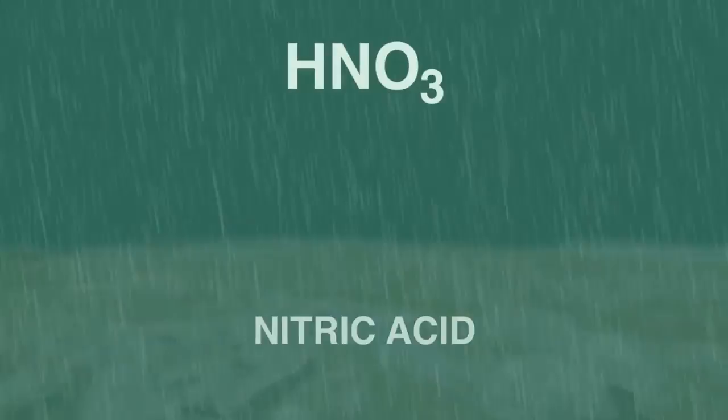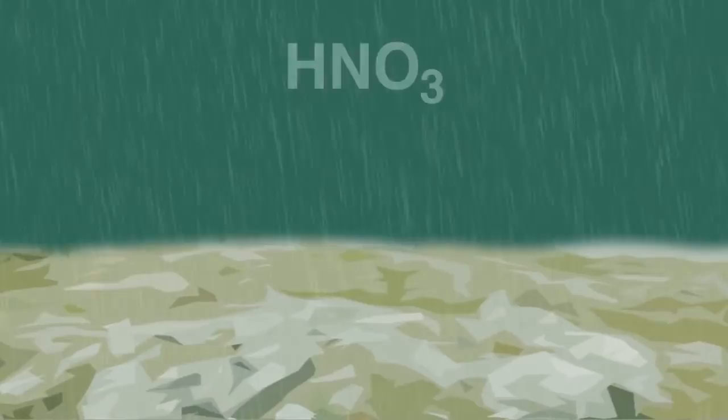If the rain falls on limestone soils which are alkaline, the acidity may be neutralized. However, if the rain lands on neutral or acid soils or on vegetation, then it can cause damage.